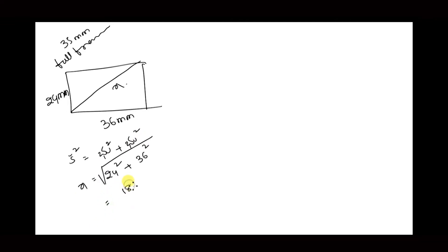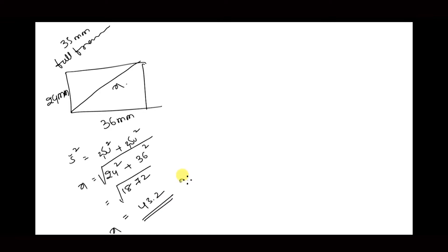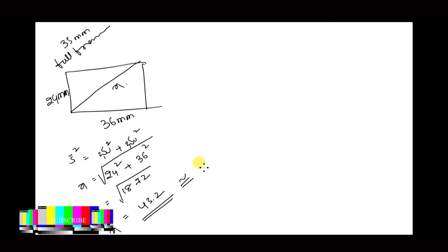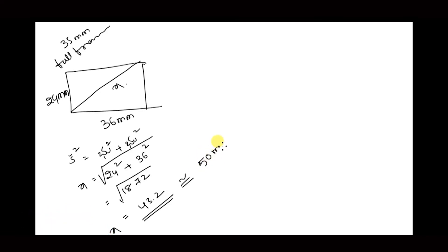Using the Pythagorean theorem: c² = a² + b², so x = √(24² + 36²) = √1872 = 43.2mm. So this x value is the diagonal size. The approximate diagonal length is 43.2mm, and the approximate normal lens focal length is 50mm.